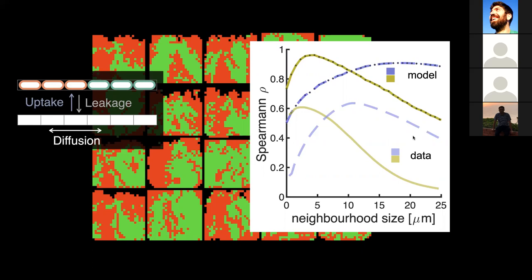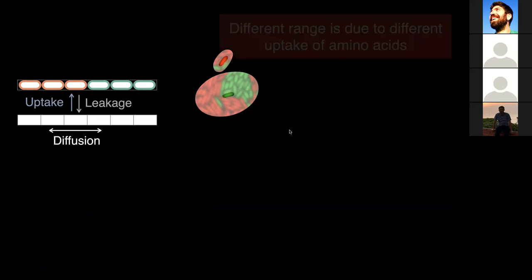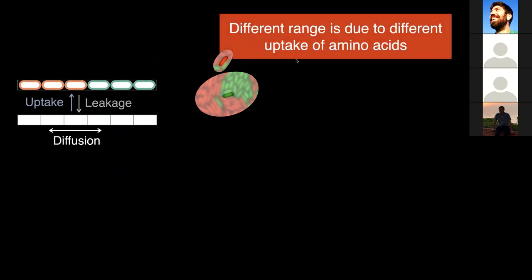So which of those parameters — the uptake, the leakage, and the diffusion — exactly sets the interaction range of these two cell types? And why does one cell type interact at a shorter range compared to the other? We found that the two different ranges are due to different uptake rates of the amino acids. The uptake rate of amino acids really sets the range of interaction between the two different species, while the other parameters like leakage and diffusion have a minor effect on this range.